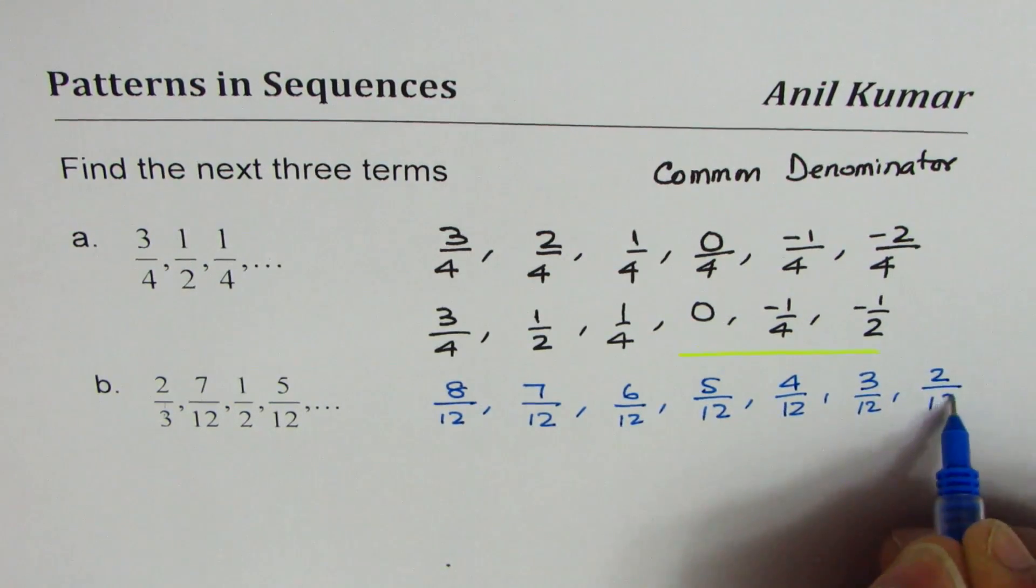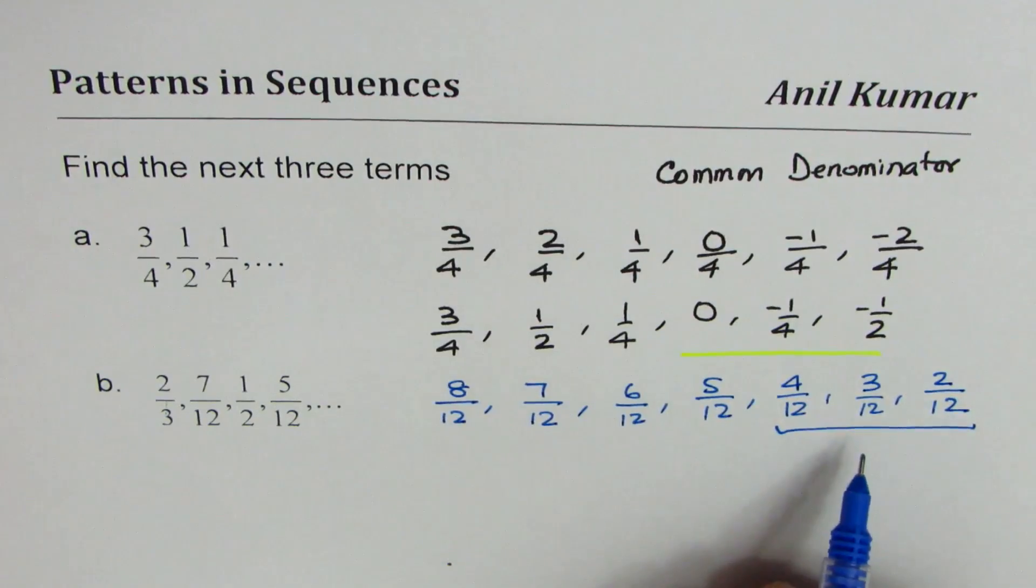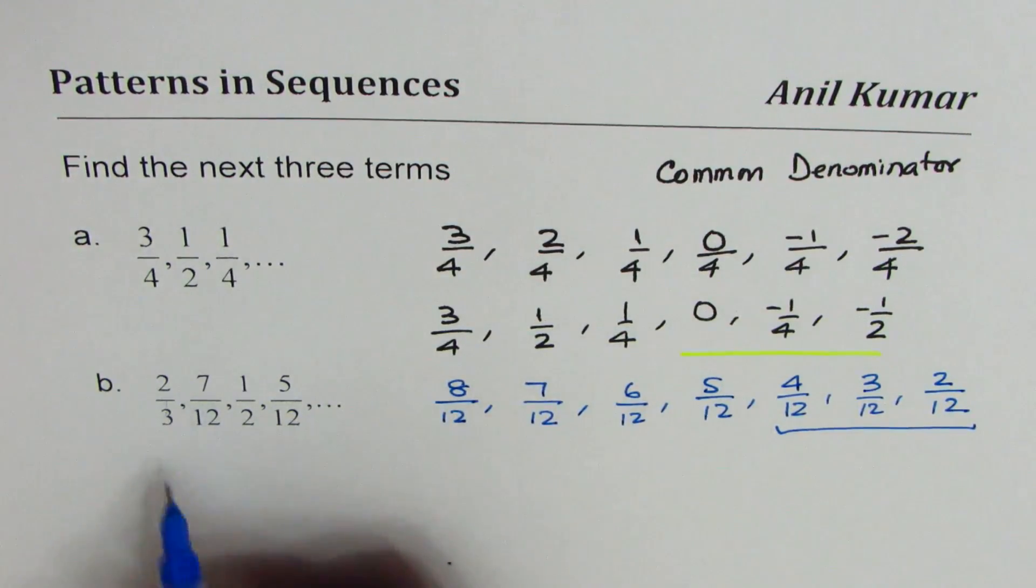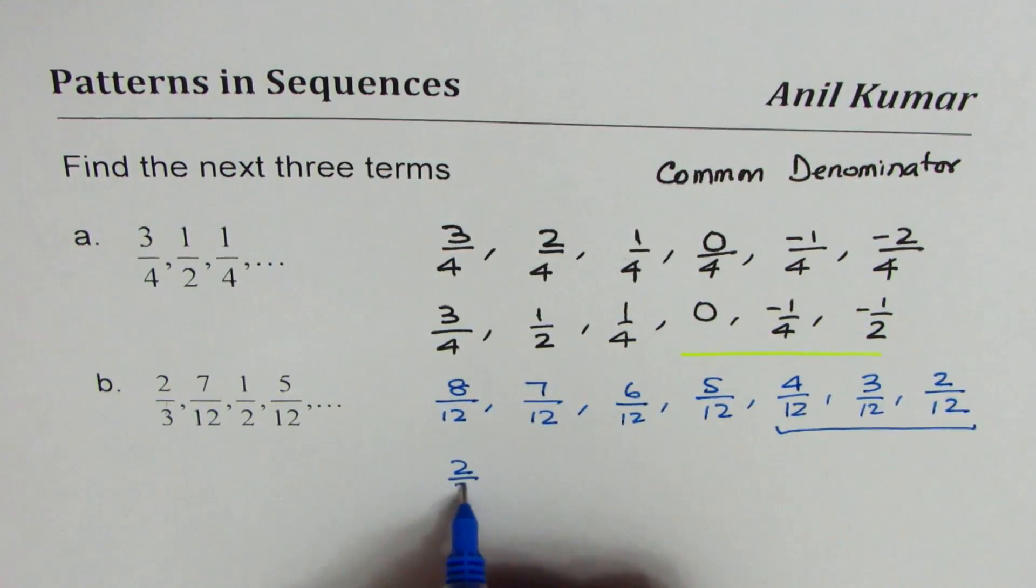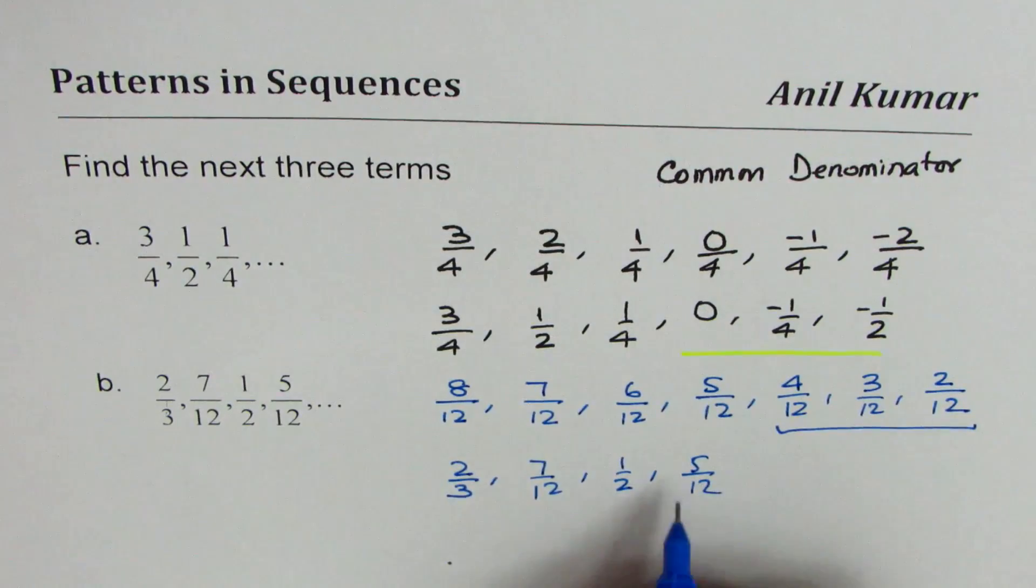These are your next three terms. Now let's simplify them. 8/12 is the same as 2/3. We have 7/12, 1/2, 5/12. This is what is given to us.